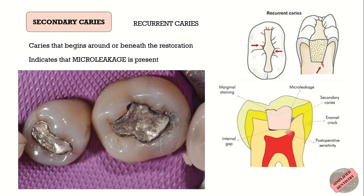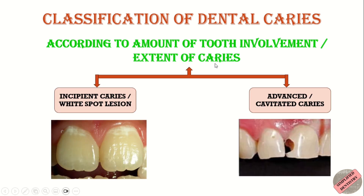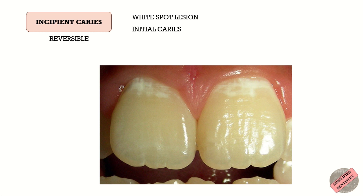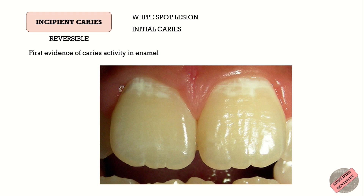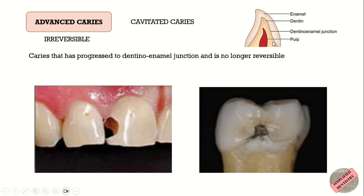The second classification is according to the amount of tooth involvement or the extent of caries. According to this classification, caries can be either incipient or advanced. Incipient caries, also known as white spot lesion, is reversible and is also referred to as initial caries, as it is the first evidence of caries activity in the enamel. On smooth surface enamel, the lesion appears white when air dried and seems to disappear when wet. Advanced caries, also known as cavitated caries, is irreversible. The caries that has progressed to the dentino-enamel junction and is no longer reversible is called advanced caries.